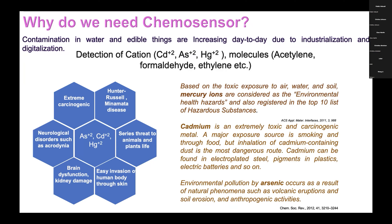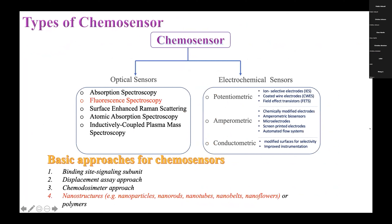When this water goes through the sedimentary layers of soil and through the transportation method into crops, these crops are taken by humans and through bioaccumulation there is accumulation of these metallic ions in the human body and organs. When the accumulation is high, it is the root cause of different diseases, which can be cardiological, lung-based diseases, and also cancer. Cadmium is also a very toxic and carcinogenic metal. A major exposure source is smoking and through food, but inhalation of cadmium-containing dust is more dangerous. Cadmium can be found in electroplated steel, pigmented plastics, and electric batteries.